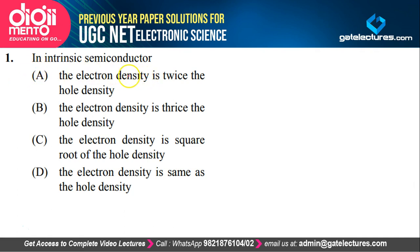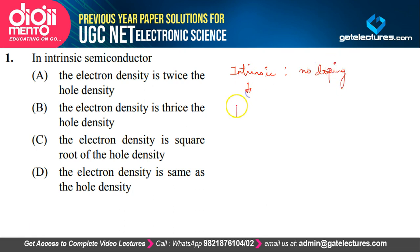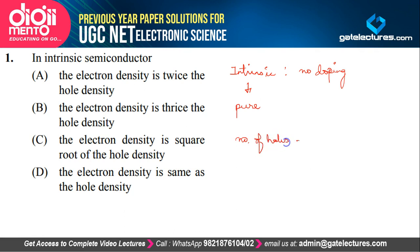The first question asks: in an intrinsic semiconductor, what is the ratio of electron density to hole density? They are asking about the relation between electron density and hole density in an intrinsic semiconductor. Intrinsic basically means no doping. Intrinsic in English means pure — without mixing, without impurity. So in an intrinsic semiconductor, we are not adding additional electrons or holes, no acceptor or donor atoms. Therefore, the number of holes and number of electrons is going to be equal. The answer is option D: electron density is the same as hole density.